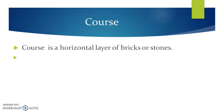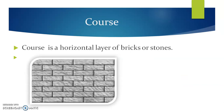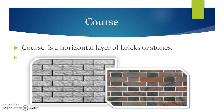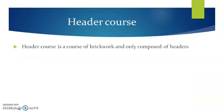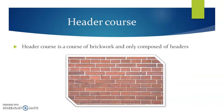The course. A course is a horizontal layer of bricks or stone. In these figures, we find that the masonry has been constructed using different horizontal layers. These are nothing but courses. Header course is a course of brickwork composed only of headers. In this figure, the alternate courses are made up of header courses. We have seen a similar figure in the definition of header.